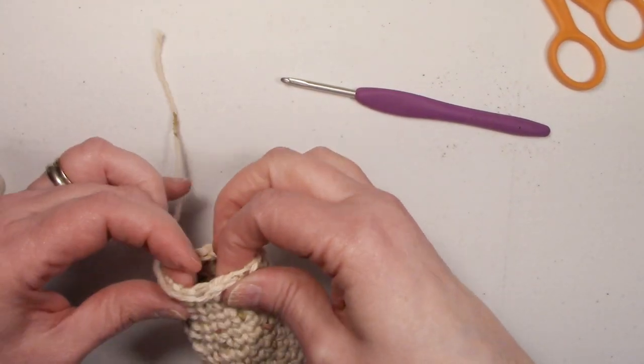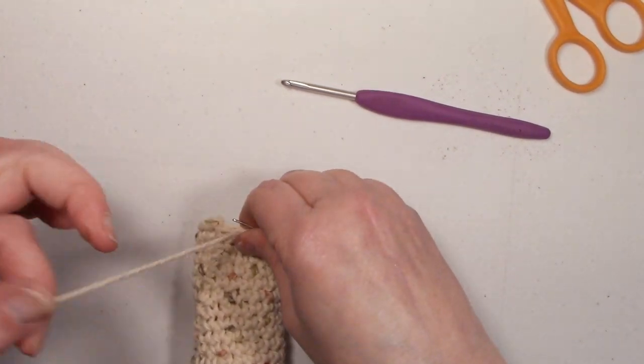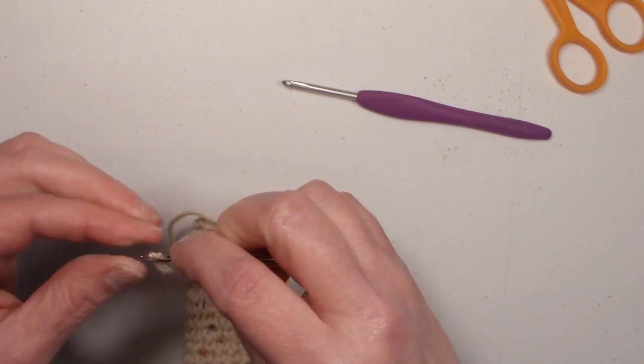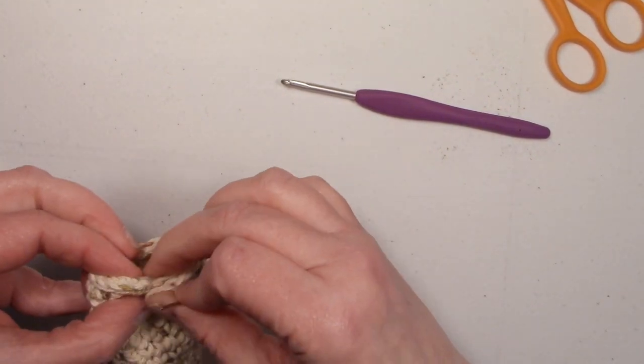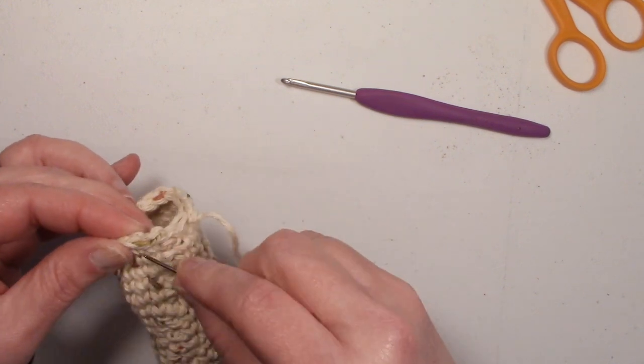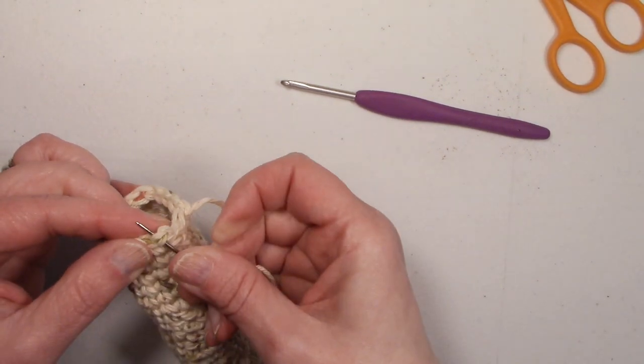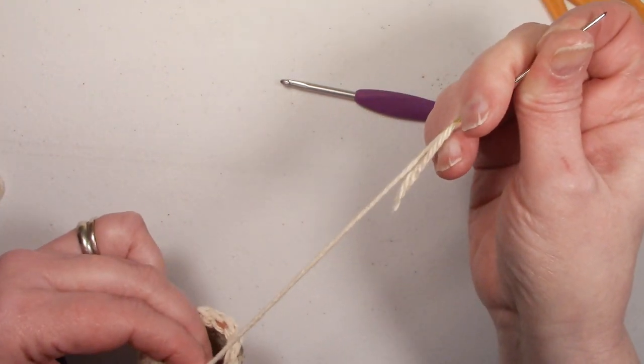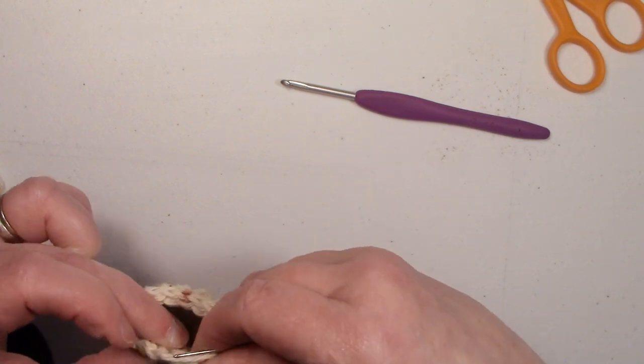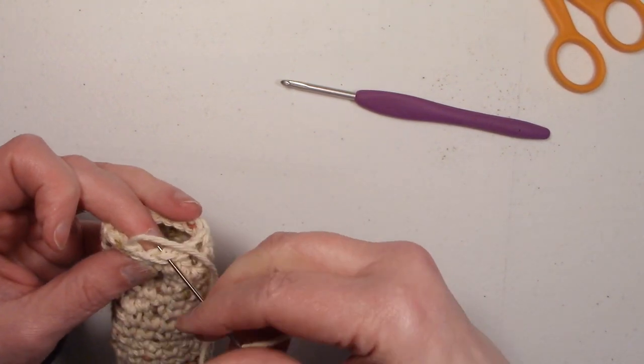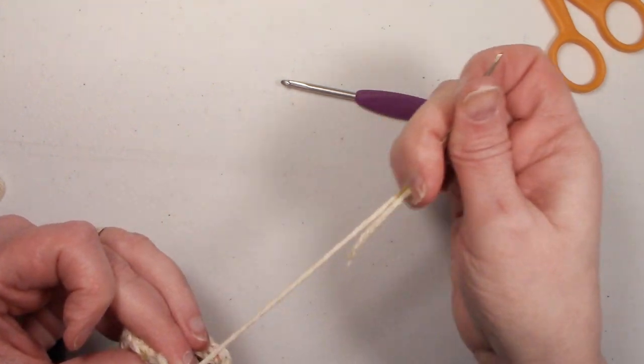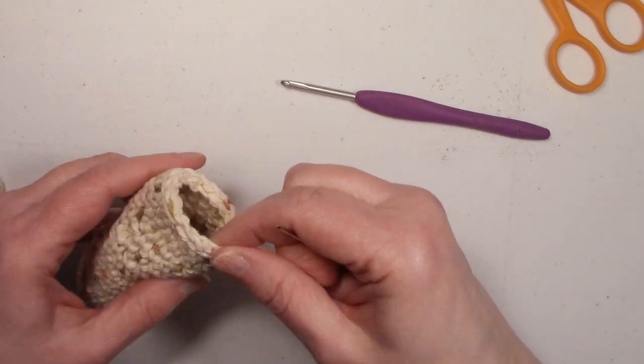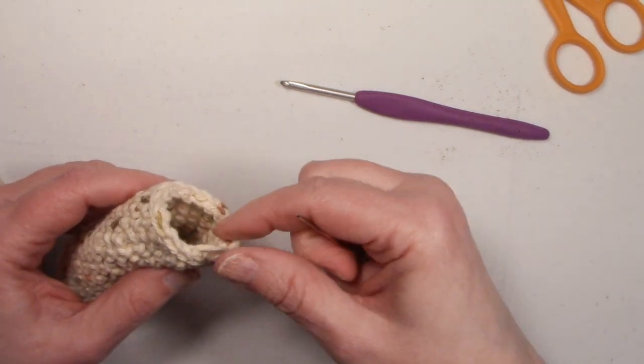And now we're going to do an invisible finish. So thread up your yarn needle. And go into that last stitch, go underneath both loops, like so. And bring your yarn together. Then go into the back loop of your first, of that last stitch. And pull it back so it looks like another stitch.